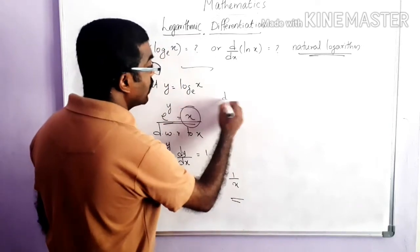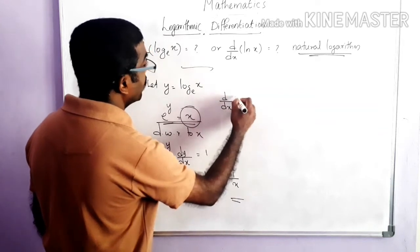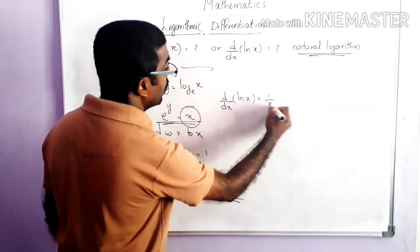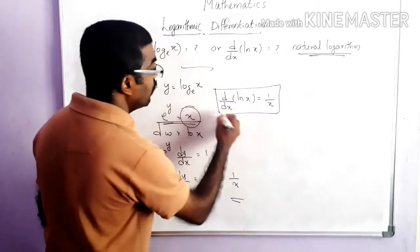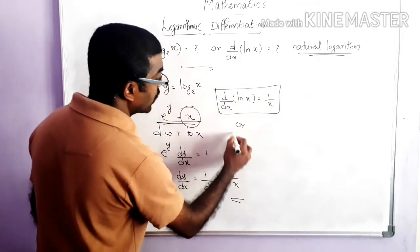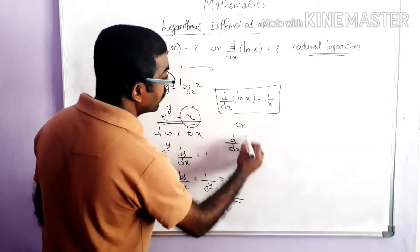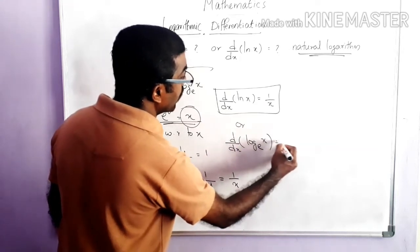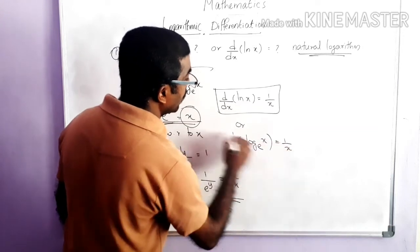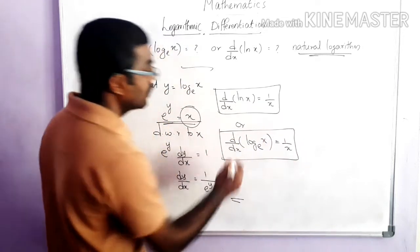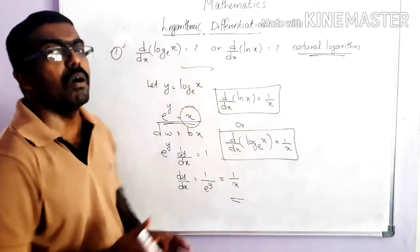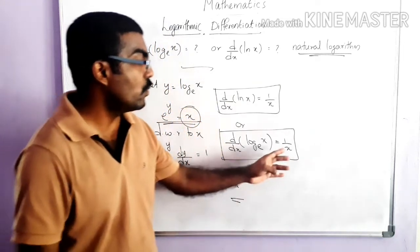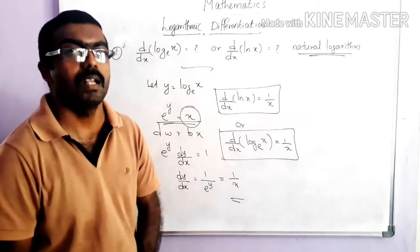That means d/dx of ln x equals 1/x. Or we can write in another notation: d/dx of log x to the base e equals 1/x. So the derivative of a natural logarithmic function is equal to 1/x.